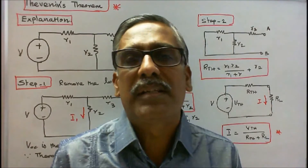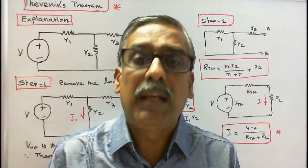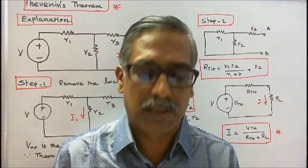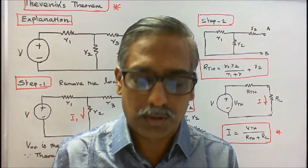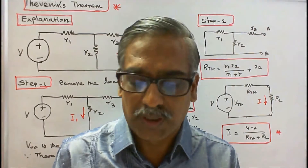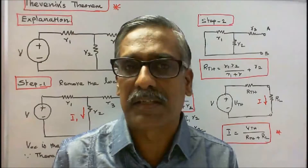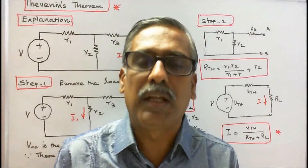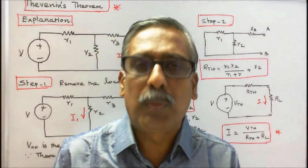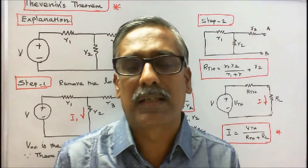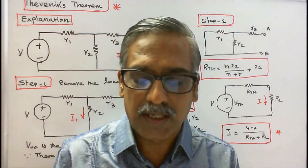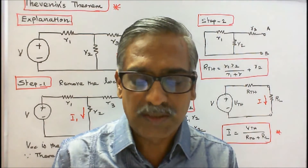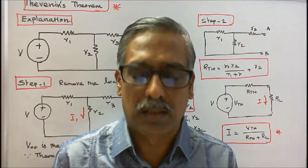Thevenin's Theorem states: any linear active bilateral network can be replaced by an equivalent circuit consisting of a voltage source in series with a resistance. The voltage source is the open-circuit voltage across the open-circuited load terminals, and the resistance is the internal resistance of the source network looking from the open-circuited load terminals.